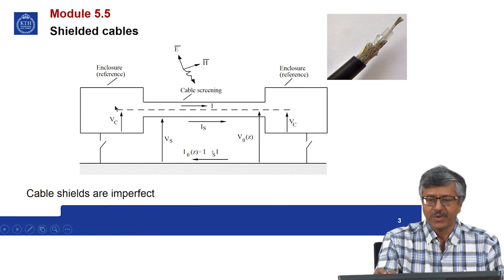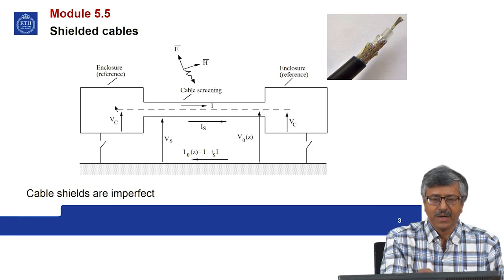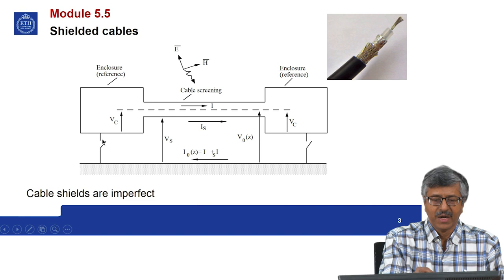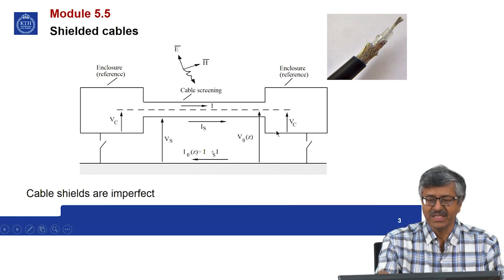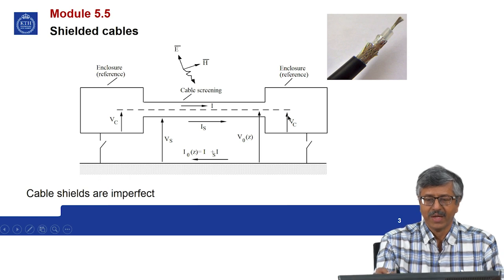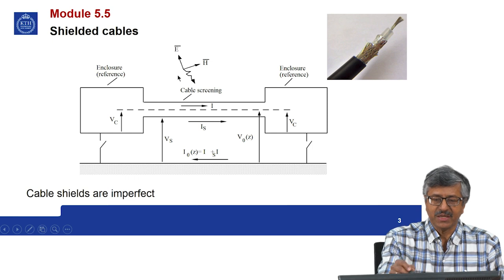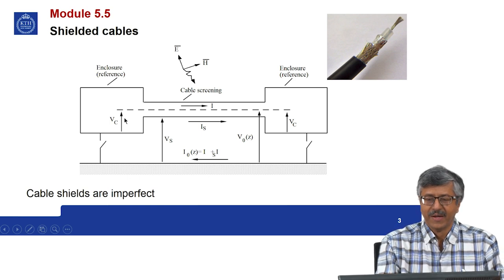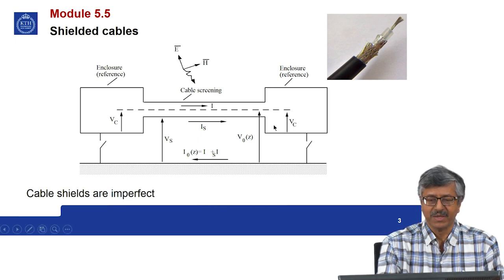Suppose there are two entities connected by cable screening. The inner conductor is shown in dotted line, and if there are no sources connected anywhere, ideally you will find voltage VC at both ends between the inner conductor and the shield. The shield is connected to the cabinet on both sides, so this voltage should be zero even when there is illumination of electromagnetic fields on this cable, because there is no leakage. But real cables will have some leakage, and due to this leakage you will find some voltage at both ends, which we will try to determine and model.